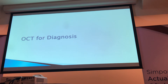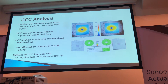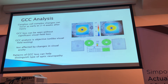The GCC changes can actually occur much earlier than the RNFL changes, as early as two to four weeks after injury. But we can't see loss without associated visual field loss. The GCC analysis is objective, unlike visual field testing, and the patterns of GCC loss can help distinguish different types of optic neuropathy.